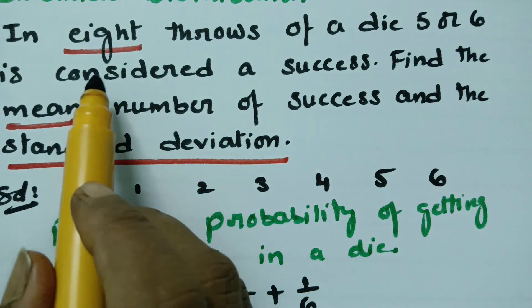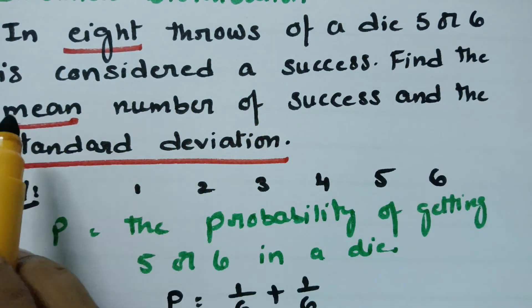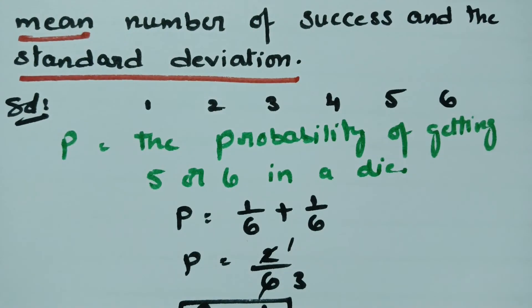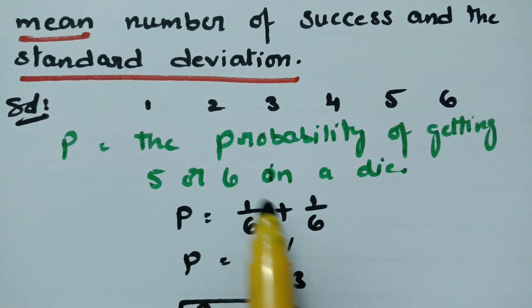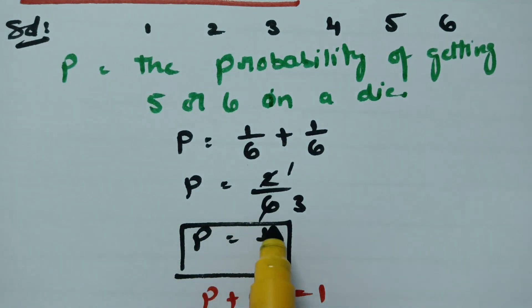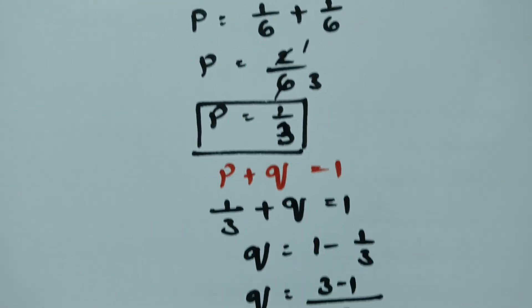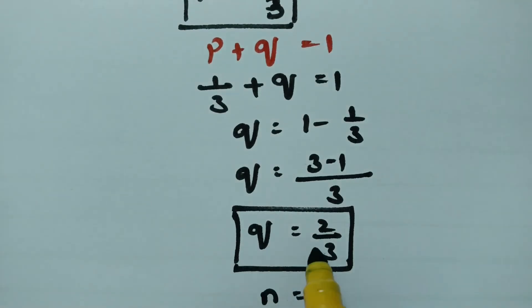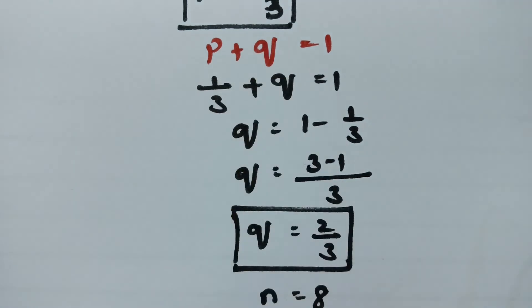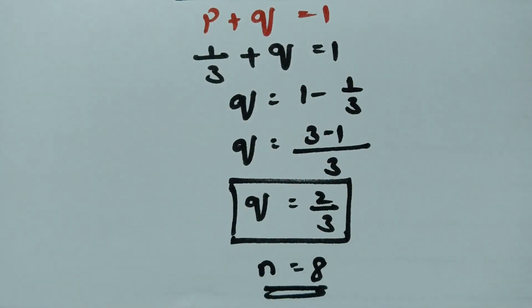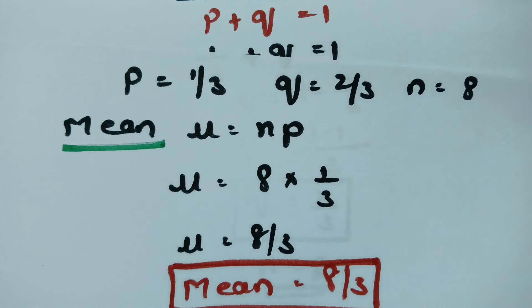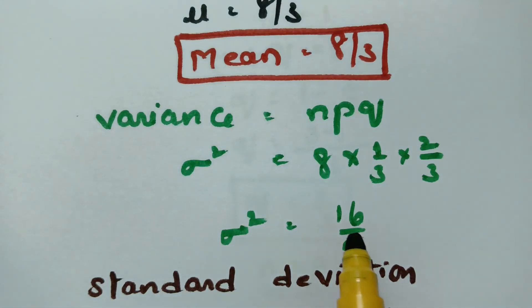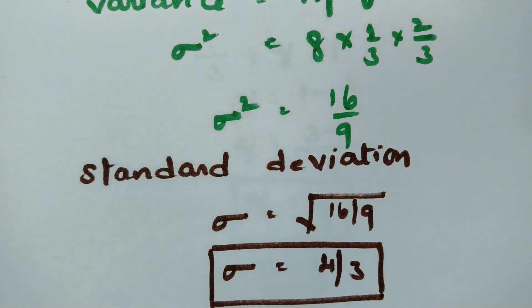To summarize: after getting P, Q and N values, in 8 throws of a die where 5 or 6 is considered a success, getting 5 or 6 each has probability 1 by 6, so P equals 2 by 6 equals 1 by 3, Q equals 2 by 3, and N equals 8. Mean equals N into P equals 8 by 3. Variance equals 16 by 9. Standard deviation equals 4 by 3.